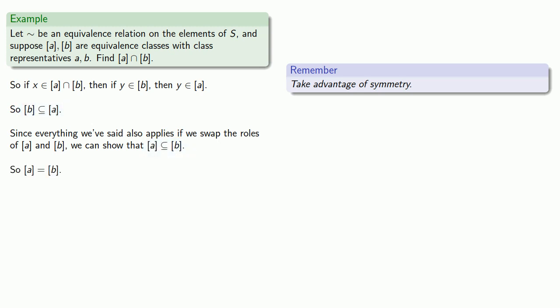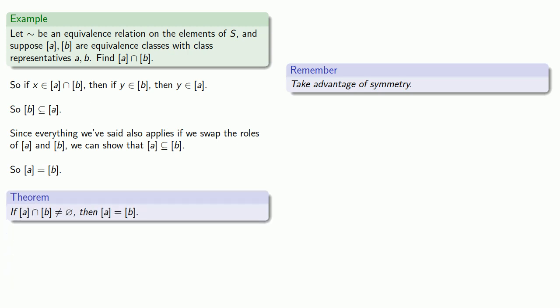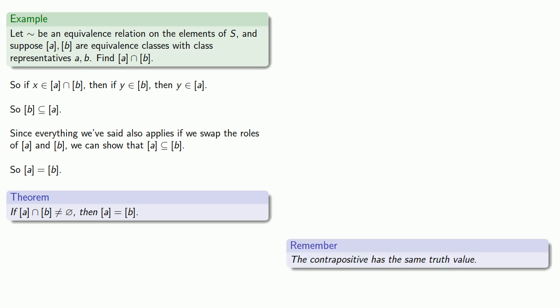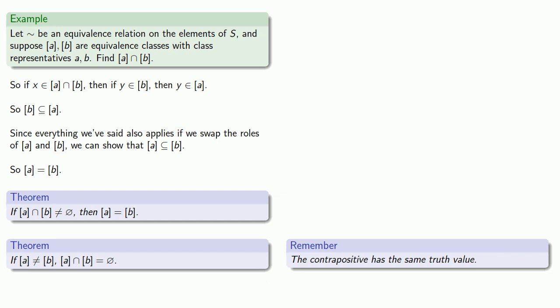This leads us to the following theorem: if the intersection of two equivalence classes is not empty — if there is something in that intersection — then the two equivalence classes are identical. And finally, a useful thing to always keep in mind: the contrapositive has the same truth value. So if two equivalence classes are not the same, then their intersection must be the empty set.